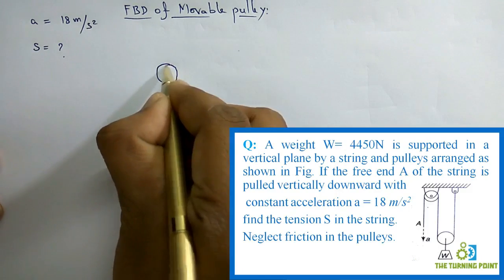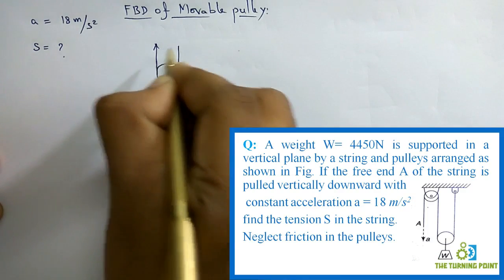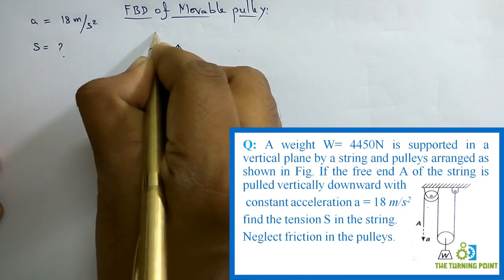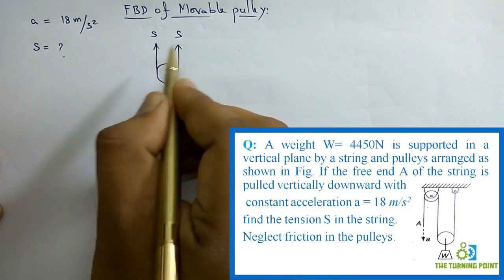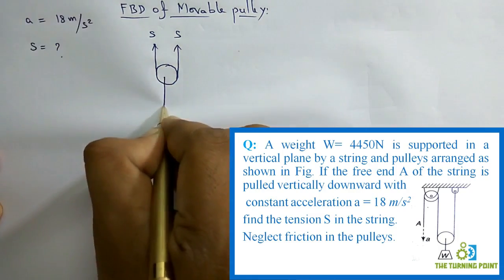This is a mobile pulley. It is connected to two ropes like this, connected to one rope like this. Along each and every rope there will be tensile force, and it is given that S is the tensile force. It is connected to the weight by means of another string.